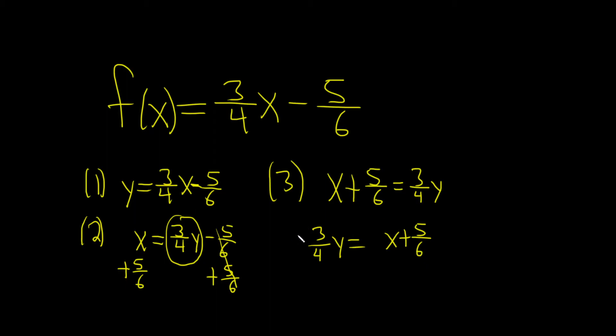And now we're going to multiply both sides by the reciprocal of 3 fourths which is 4 thirds like this. Then over here this is two terms, so you do want to put parentheses here like this.